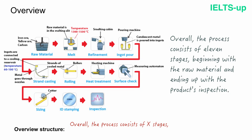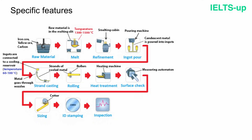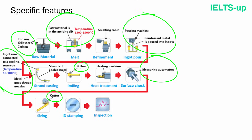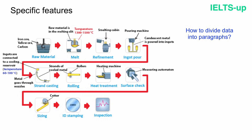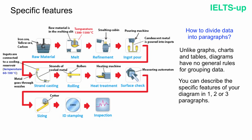That's all with our overview — we move on to the next paragraph. Once we have finished the overview, we should provide specific features in our next few paragraphs. When describing graphs, charts, or tables, we describe changes in numbers and percentages. But now we have a diagram, so we should describe each stage of our process in detail, using all the additional information and hints that accompany most stages. Unlike graphs, charts, and tables, diagrams have no general rules for grouping data. You can describe the specific features in one, two, or three paragraphs, grouping the information the way you prefer.